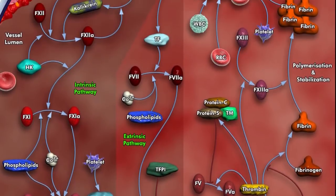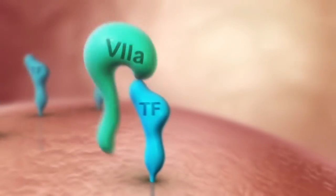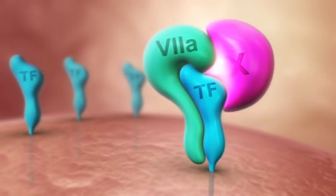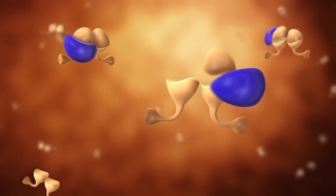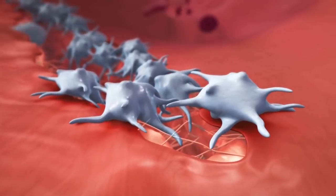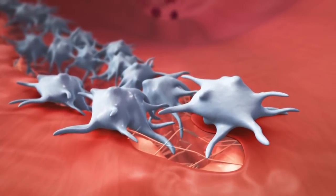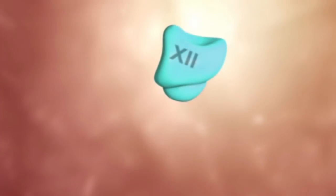Evolutionists have a problem — through all of their weak 'just so' stories, they have no explanation for the human blood clotting cascade. Initial trauma to tissue activates factor 7, which then activates factor 10, catalyzing fibrin from fibrinogen, covering the wound and creating a basic clot. This is just the spark, called the extrinsic pathway, which sets the intrinsic pathway in motion.